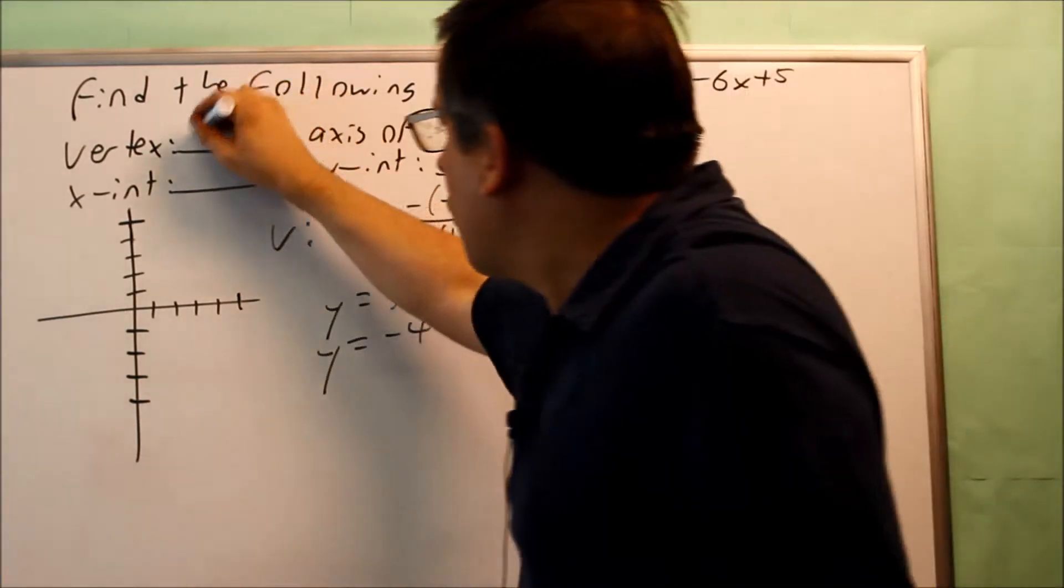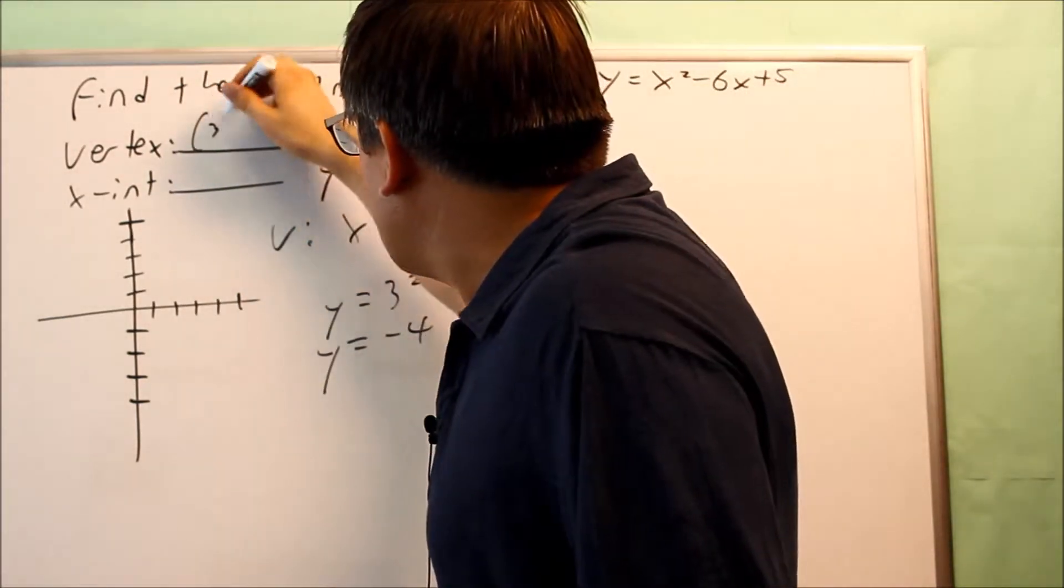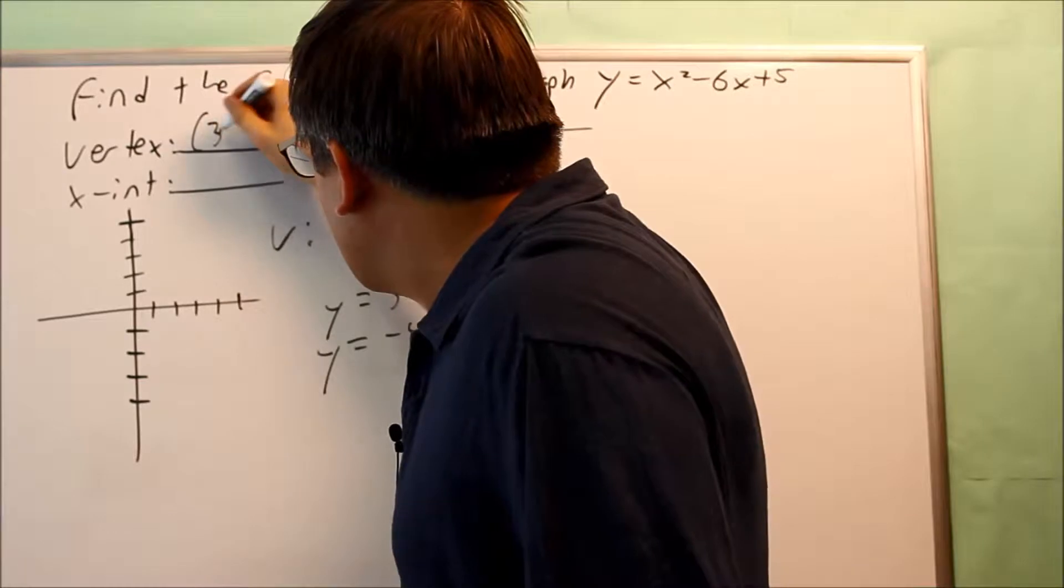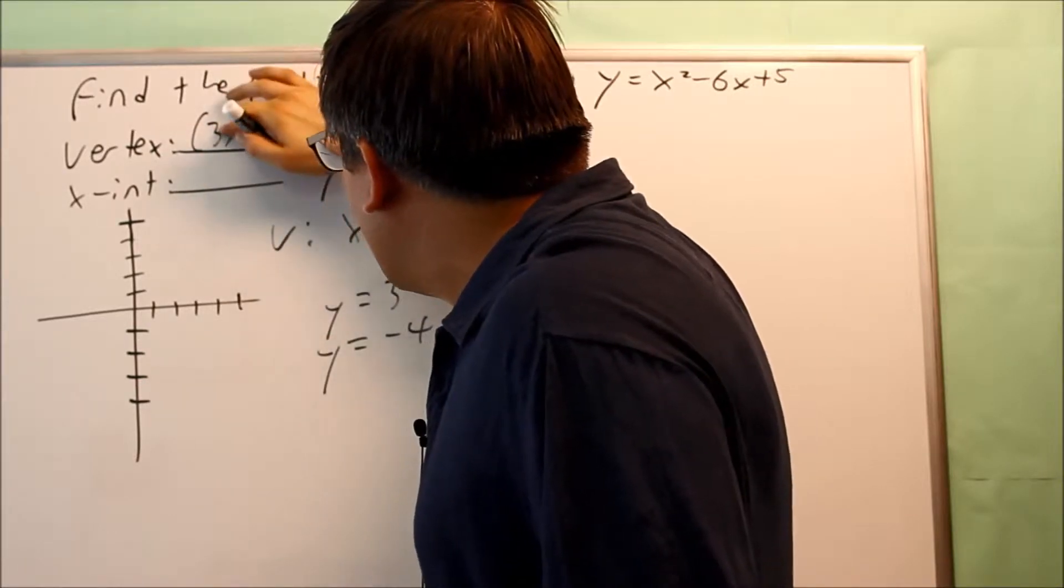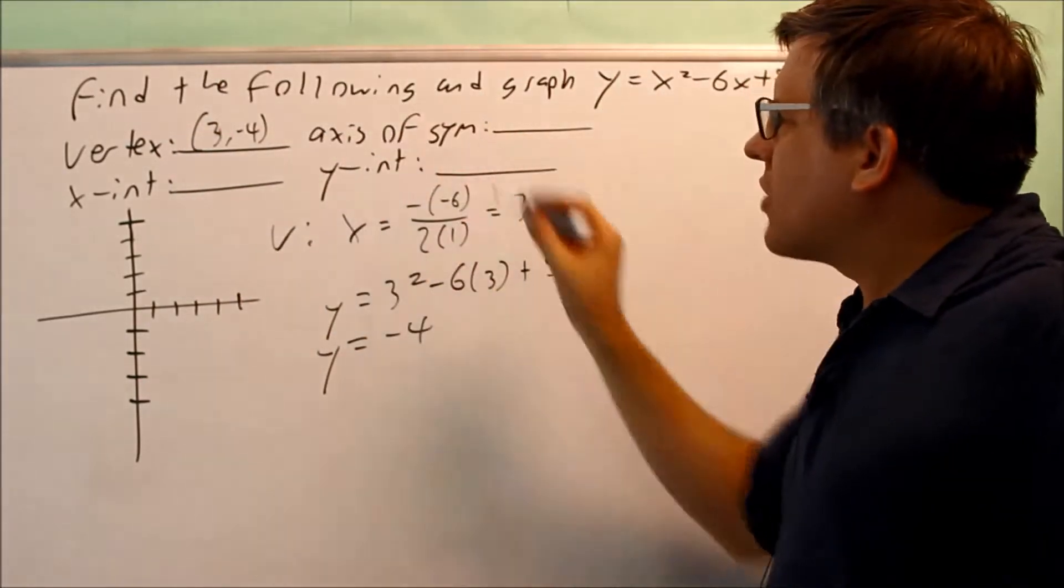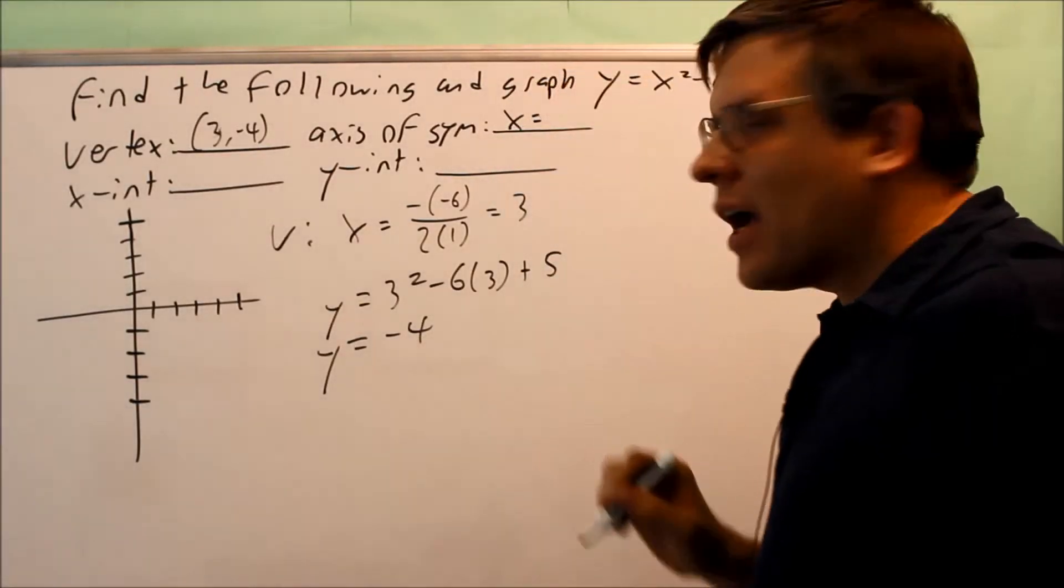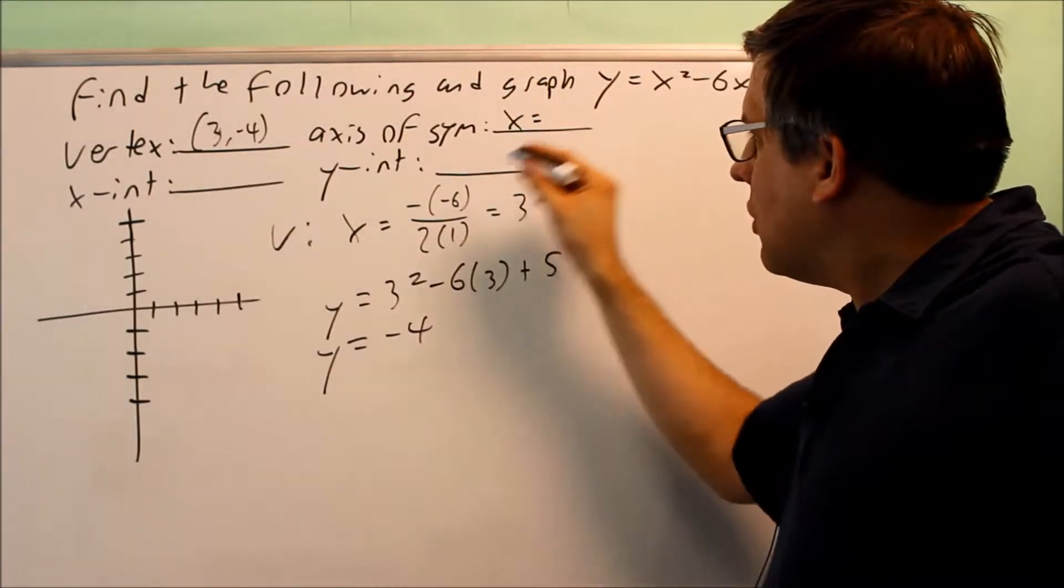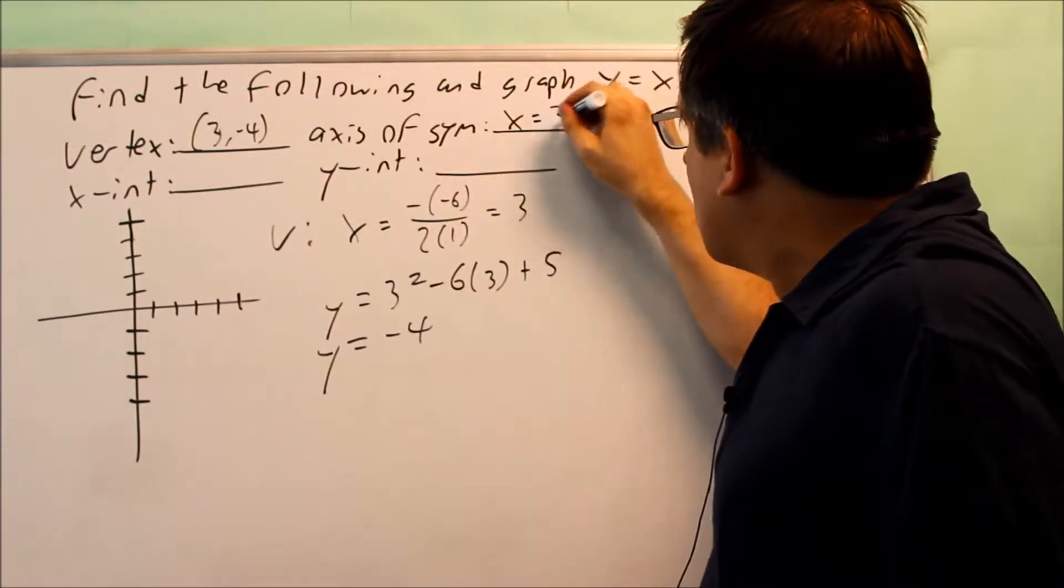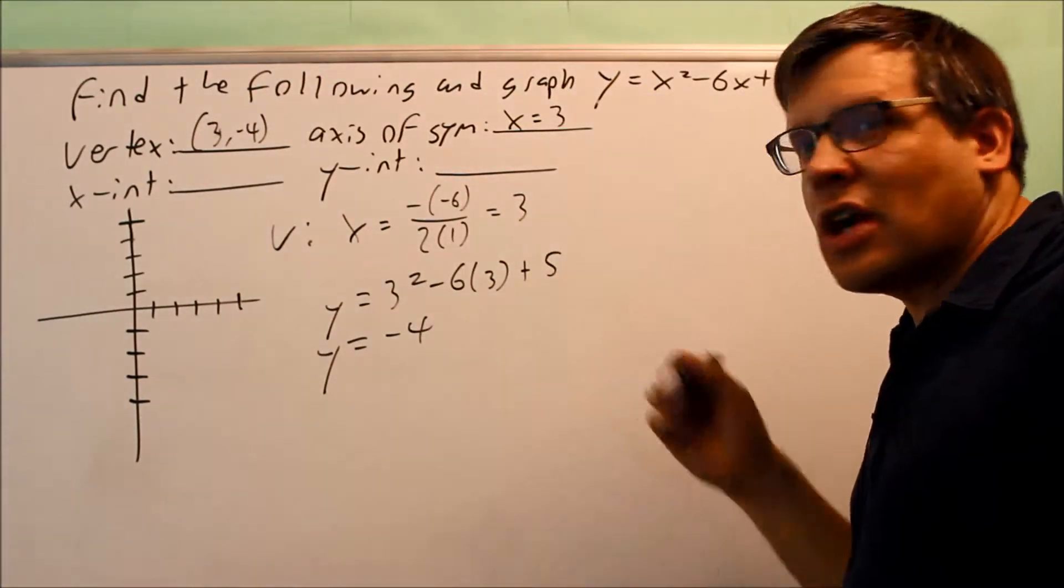So now I know the coordinates of my vertex. It's going to be 3 and negative 4. What you also know right away is your axis of symmetry. Your axis of symmetry always begins with x equals, and you're just going to indicate the x-coordinate of your vertex, which is going to be 3. So axis of symmetry is x equals 3.